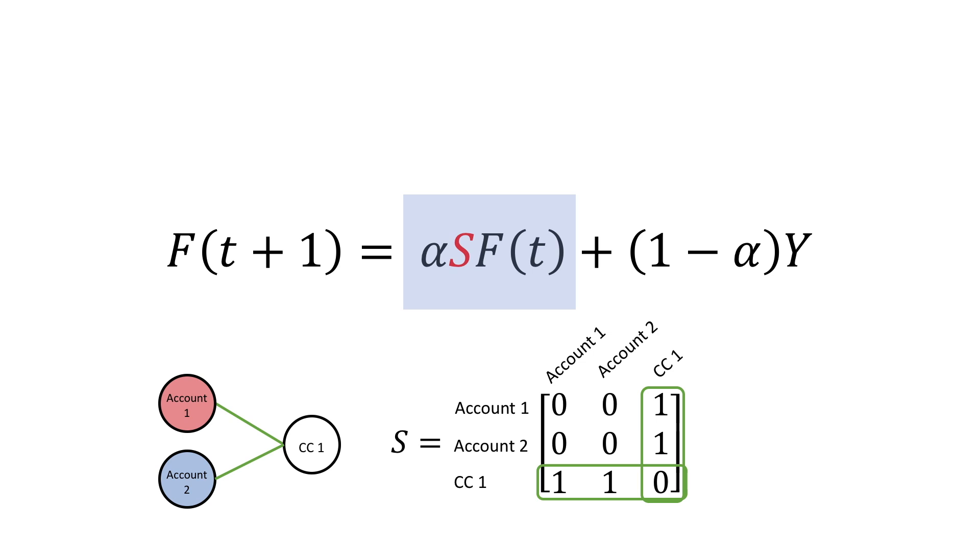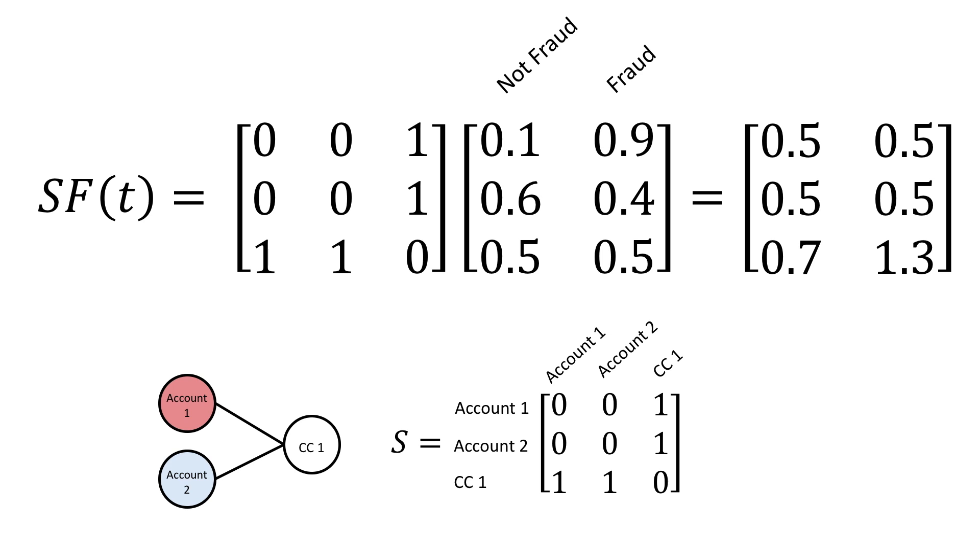To compute the first term, our S-matrix multiplies the previous step's predictions, F of t. Since this is a fraud example, our F-matrix will have two columns, one for the legitimate score and another for fraud. And there will be a row for every node in our graph. This is a made-up example, so let's make up some numbers. I've colored account one red, so let's set its scores as 0.1 and 0.9, meaning it's more likely to be fraud than legitimate. I colored account two as light blue, so let's fill in scores of 0.6 for legit and 0.4 for fraud. And finally, we don't have any opinion about the CC number, so let's set both values to 0.5.